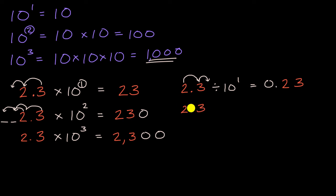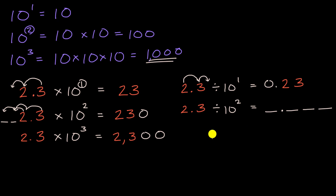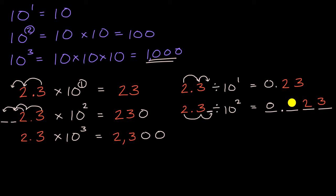What about 2.3 divided by 10 to the second power? Here we shift all digits two places to the right. Let me mark the places: ones, tenths, hundredths, thousandths. The two in the ones place shifts two spots to the hundredths place, and the three in the tenths place shifts two spots to the thousandths place. We have zero ones and zero tenths, so 2.3 divided by 100 equals 0.023.